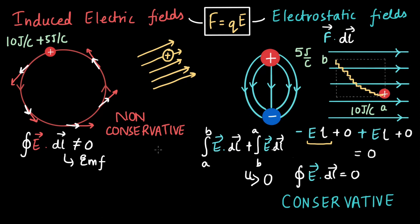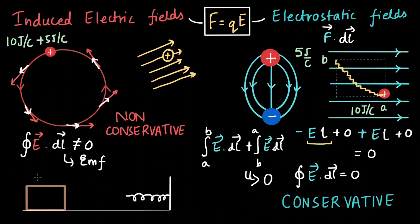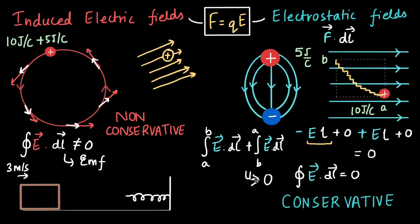This is analogous to how friction is non-conservative. If a block moves to the right at three meters per second, compresses a spring, and returns to its original position, it comes back with a speed less than three meters per second. Friction did negative work and removed energy from the block, converting mechanical energy into thermal energy. So mechanical energy is not conserved — just like with induced electric fields.